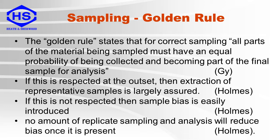There is a golden rule for sampling which states that for correct sampling, all parts of the material being sampled must have an equal probability of being collected and becoming part of the final sample for analysis. If this rule is respected at the outset, then extraction of representative samples is largely assured. If this rule is not respected, then sample bias is easily introduced and no amount of replicate sampling and analysis will reduce bias once it is present.